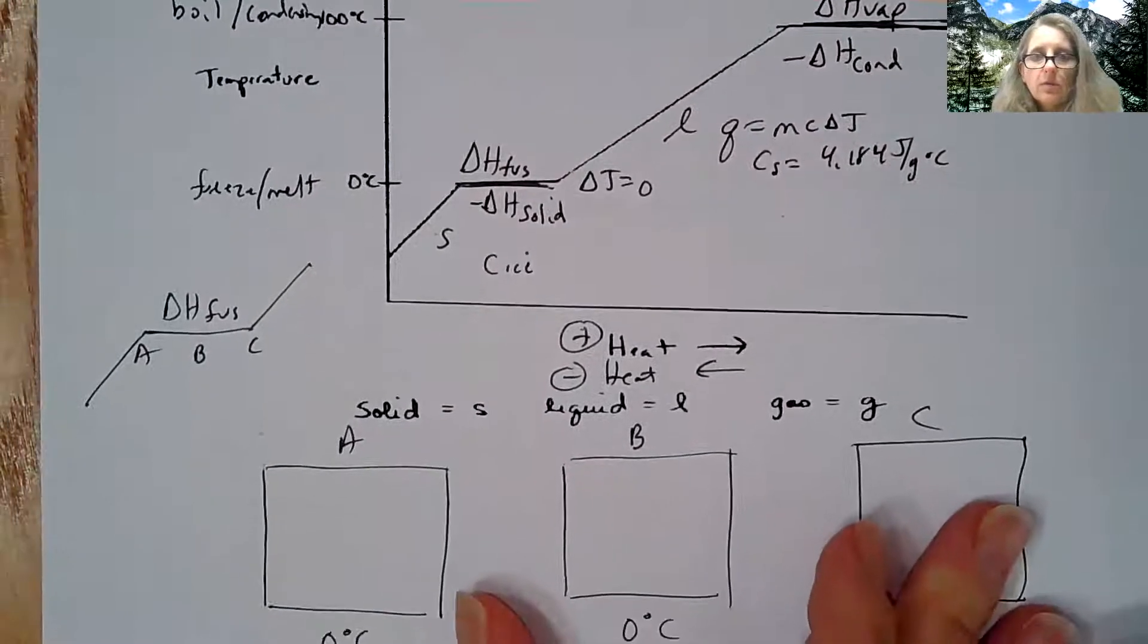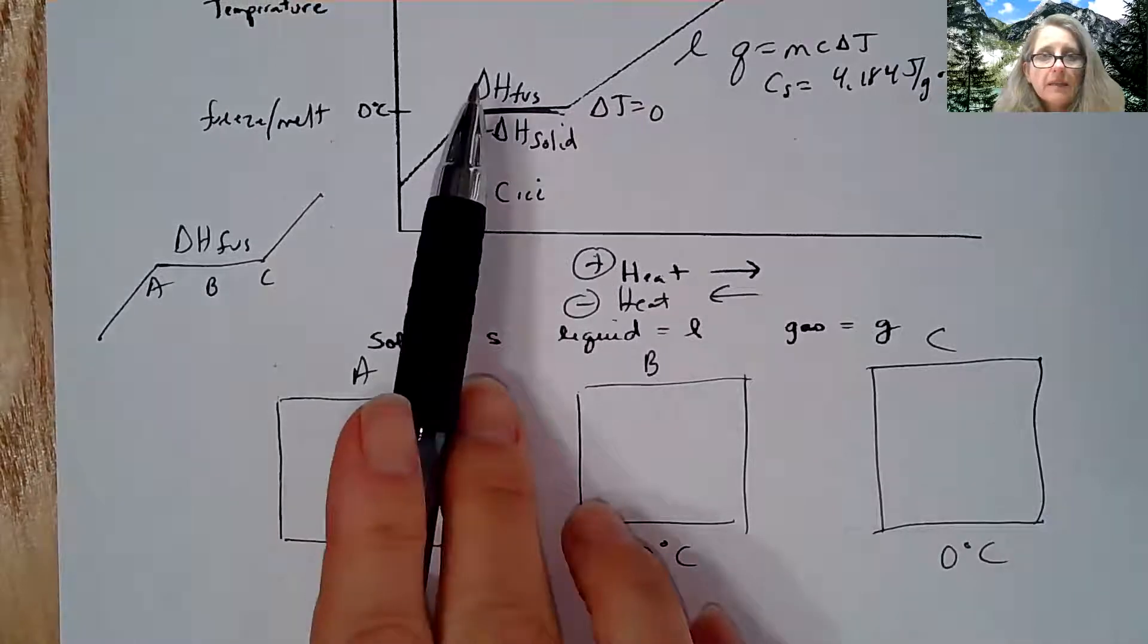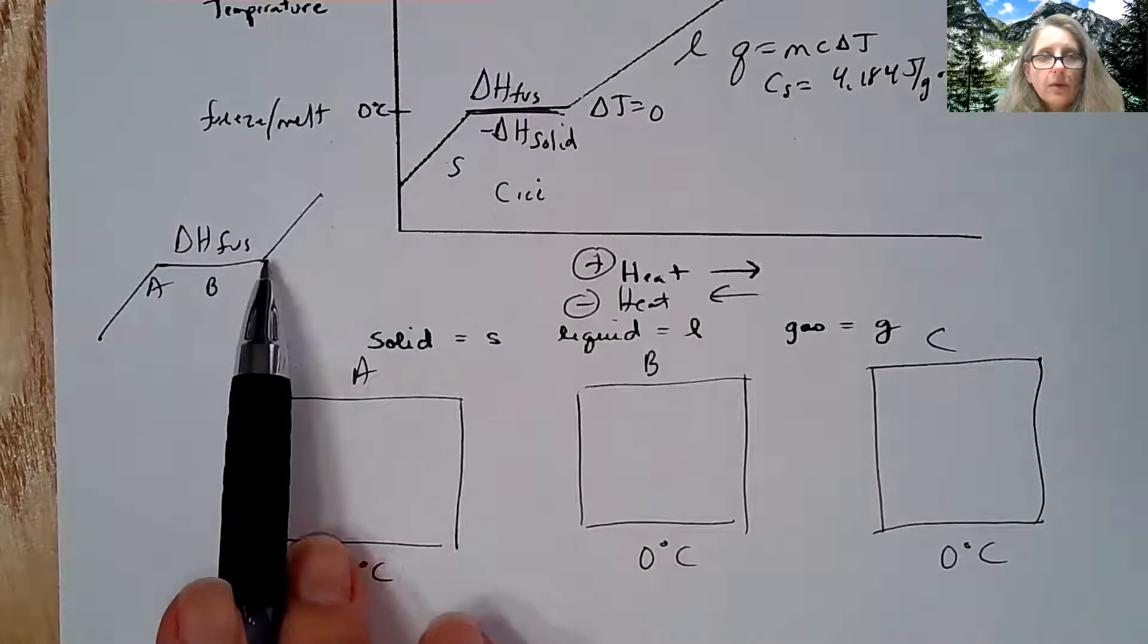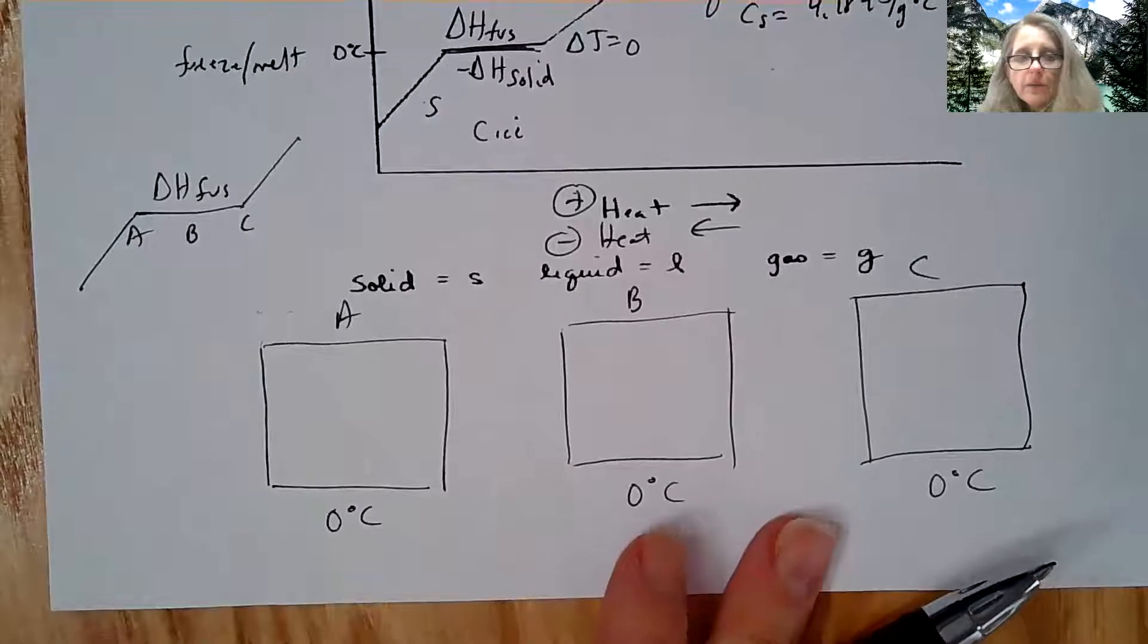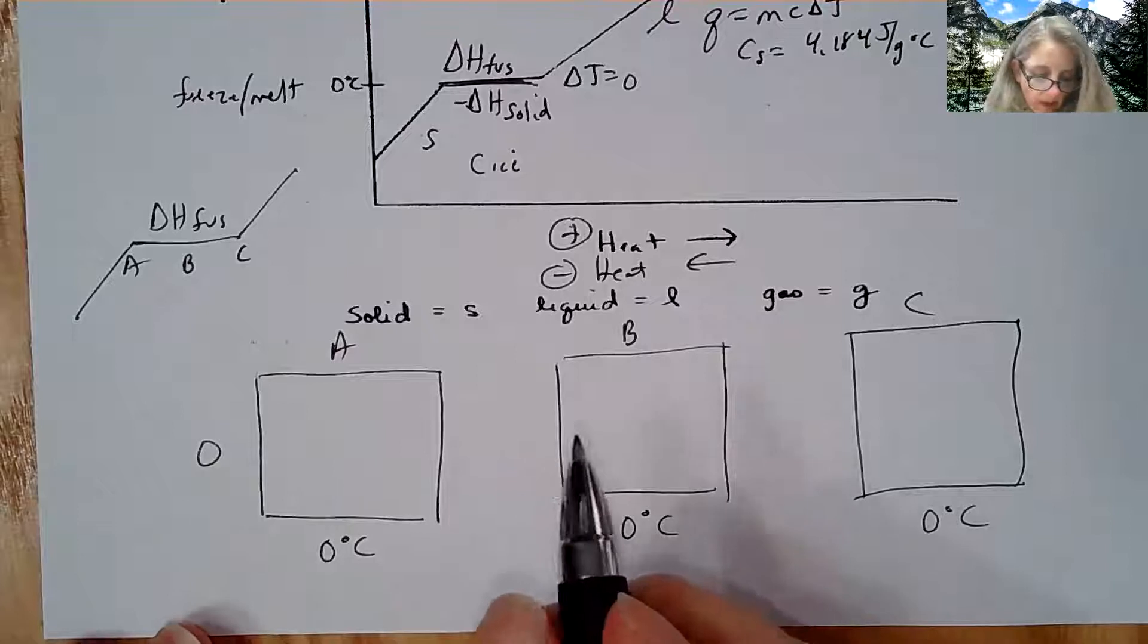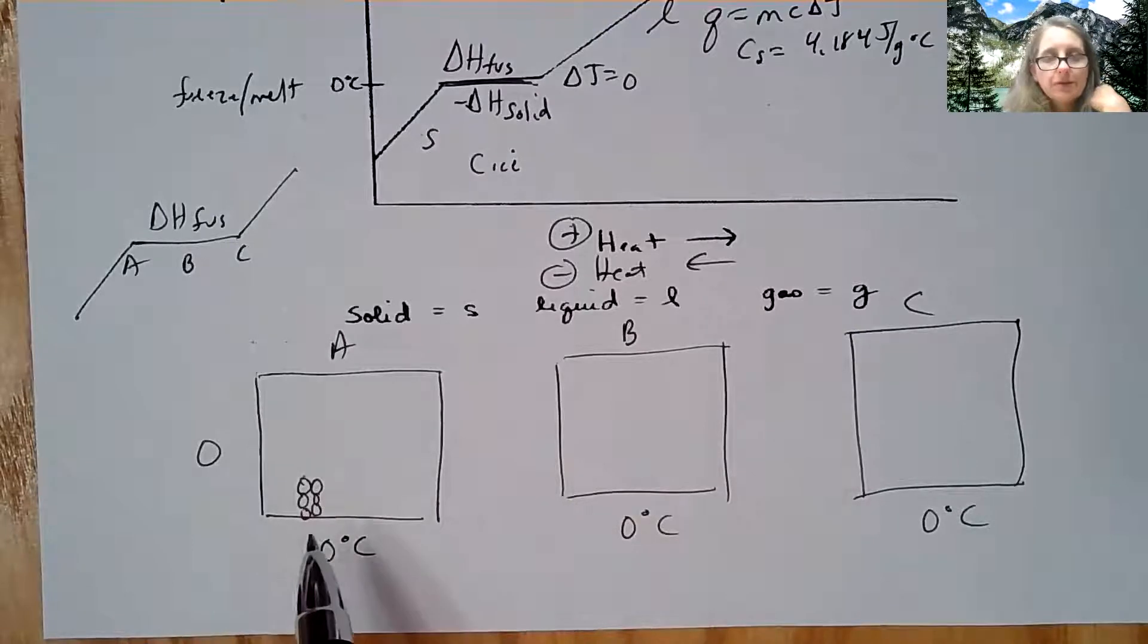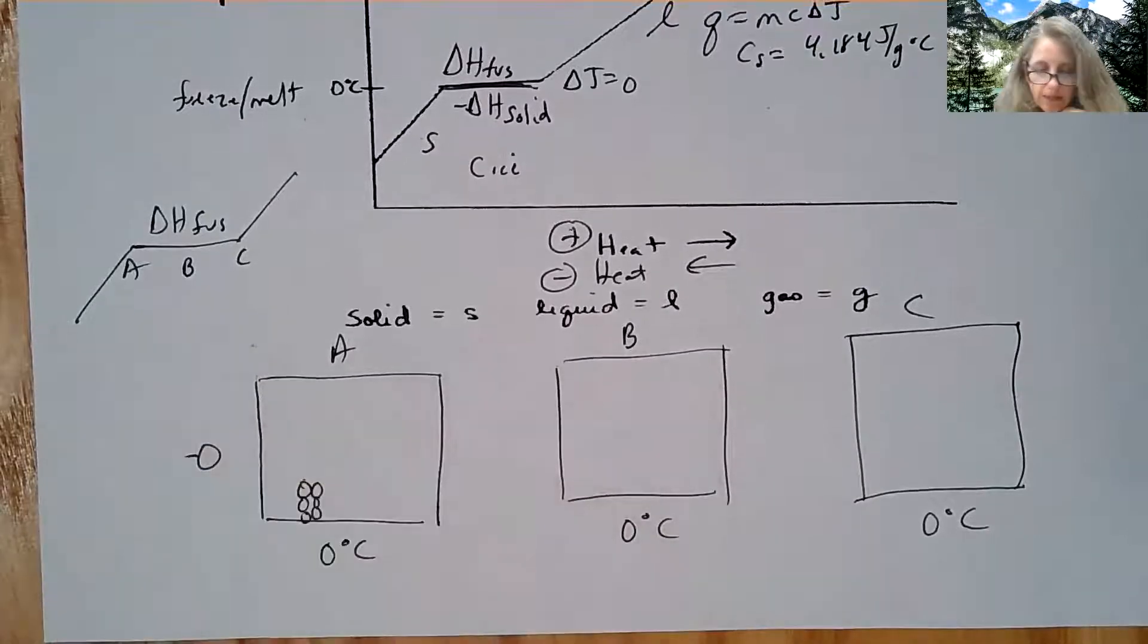So if you want to draw three boxes on the bottom here and I'm going to take the heat of fusion this plateau and I'm going to label A, B, and C. So A and C are on the corners here and then B is somewhere in the middle. So we're at zero degrees Celsius and we have water and we're going to circle as our smallest thing. If you remember back to chemistry, we draw the circles all touching together.